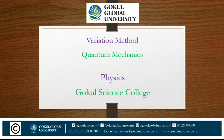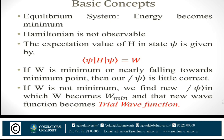In quantum mechanics, the variational method is one way of finding approximations to the lowest energy eigenstate or ground state, and some excited states. The approximation method allows calculating approximate wave functions of molecular orbitals, and the basis for this method is the variational principle. Before we start using the variation method, let us discuss some basic concepts regarding the variational method.